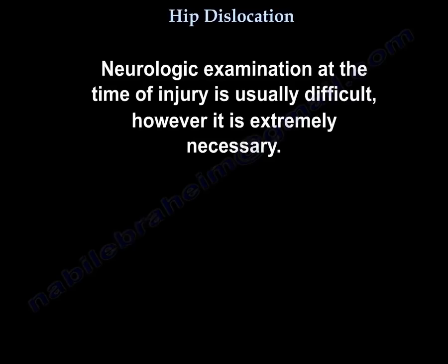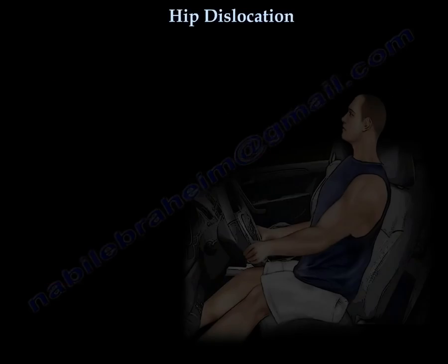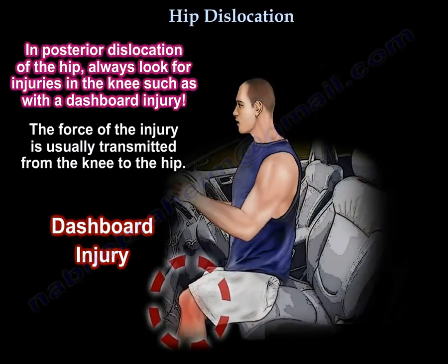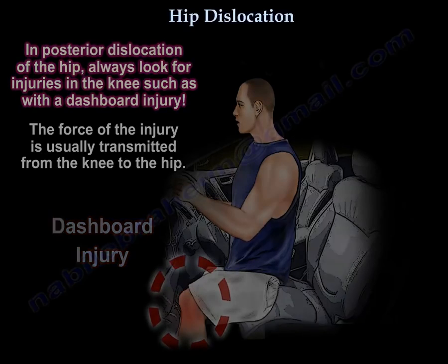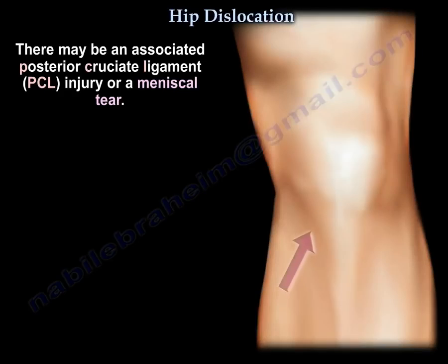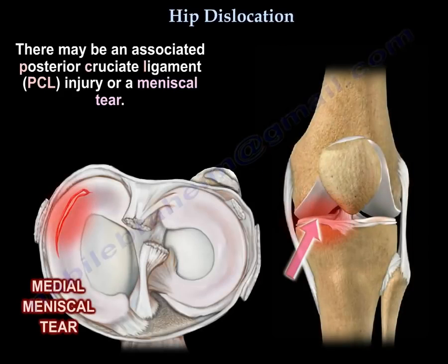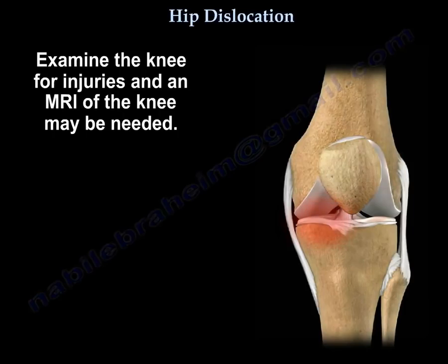Neurologic examination at the time of injury is usually difficult; however, it is extremely necessary. Check for sensation on the top of the foot. In posterior dislocation of the hip, always look for injuries in the knee, such as with a dashboard injury. The force of the injury is usually transmitted from the knee to the hip. There may be an associated posterior cruciate ligament injury or a meniscal tear. Examine the knee for injuries and you may need to get an MRI.